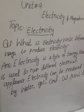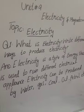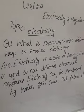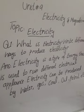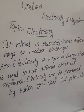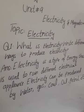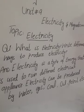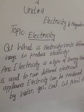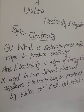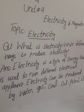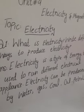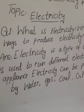As we discussed at the start of this lesson, electricity is the type of energy that is used to run different electrical appliances. We can produce electricity by these sources: electricity can be produced by water, gas, coal, oil, petrol, etc.